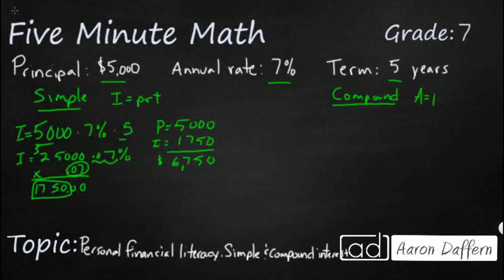So this is the final amount, calculated using what we see on our reference chart. The formula is A equals P times the quantity 1 plus R, raised to the power of the time T. Our final amount is going to be our principal — once again $5,000 — multiplied by 1 plus our rate, still 7%, so that's 0.07, and we're going to raise that to the power of 5.